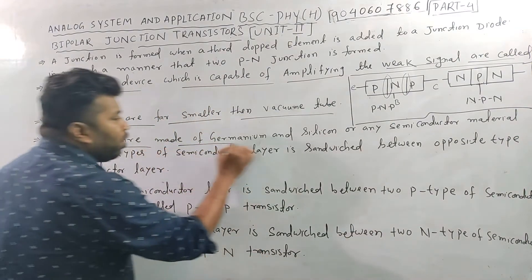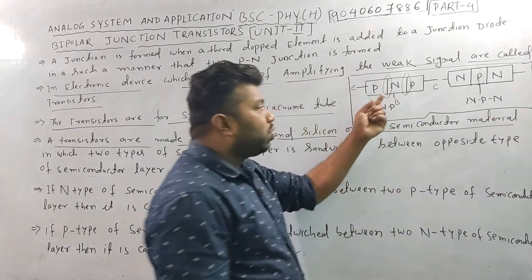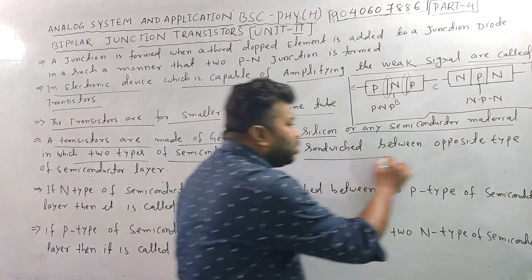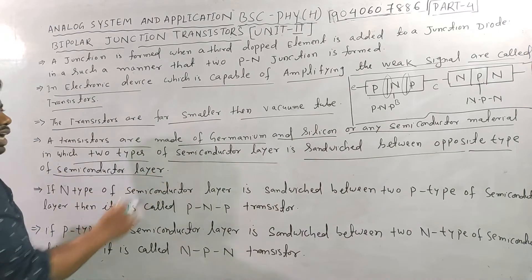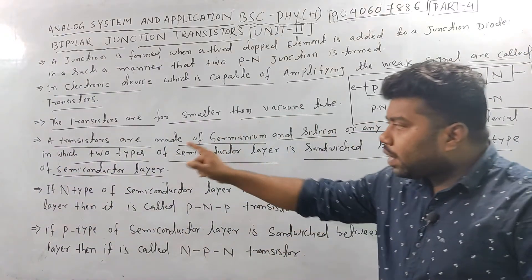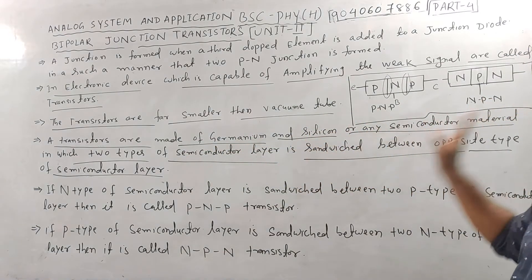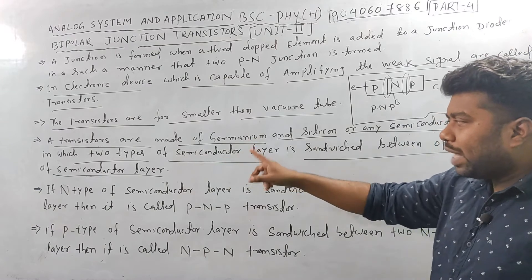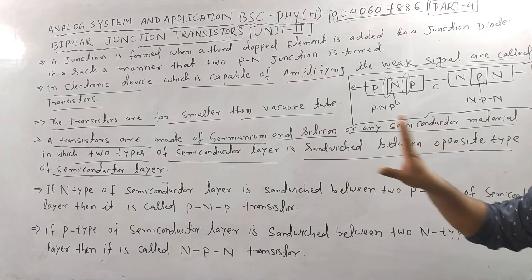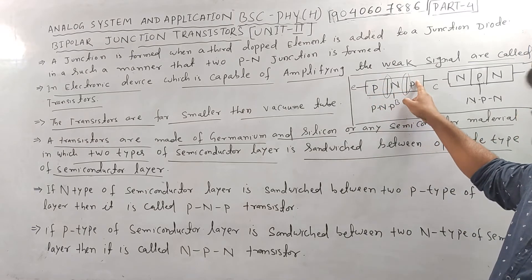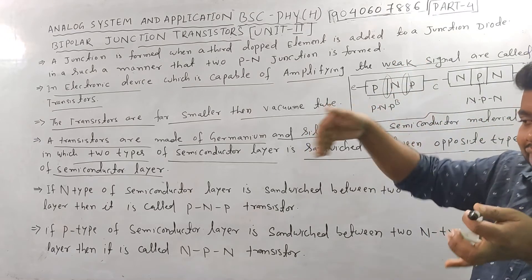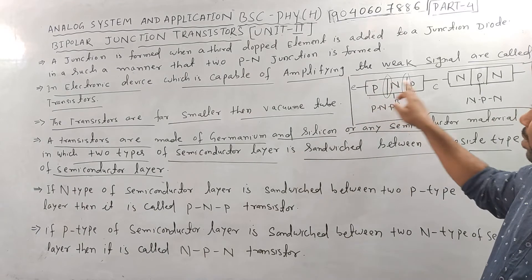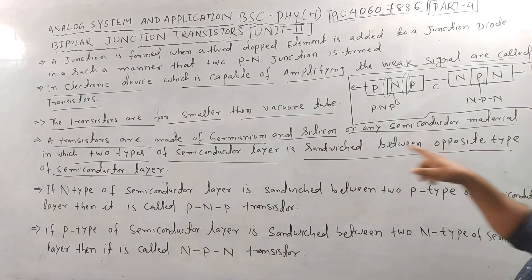Transistors are made of germanium or silicon or any other semiconductor material. In a transistor, two layers of one type of semiconductor are sandwiched between an opposite type of semiconductor layer — forming either PNP or NPN structure.